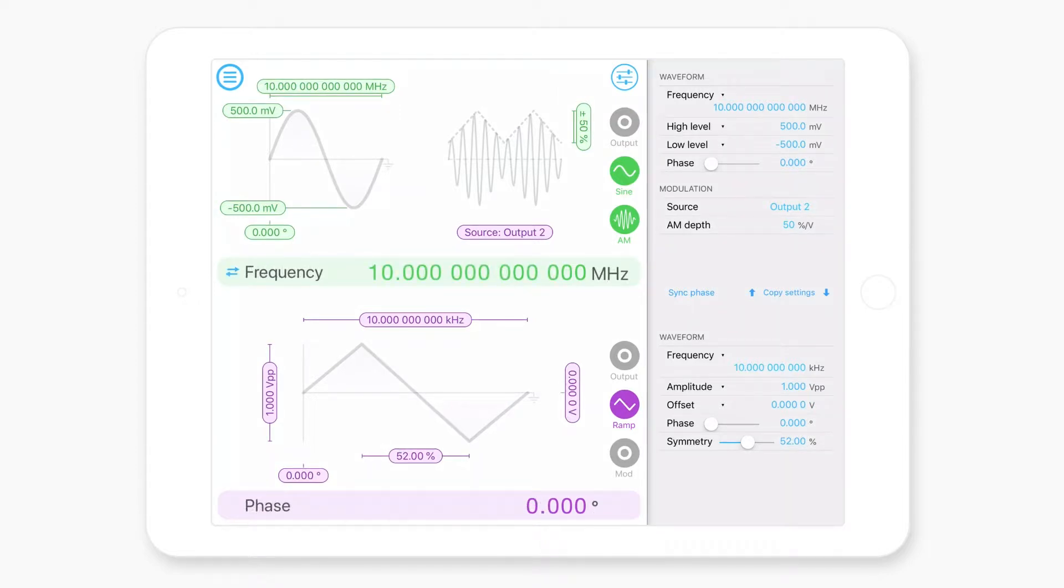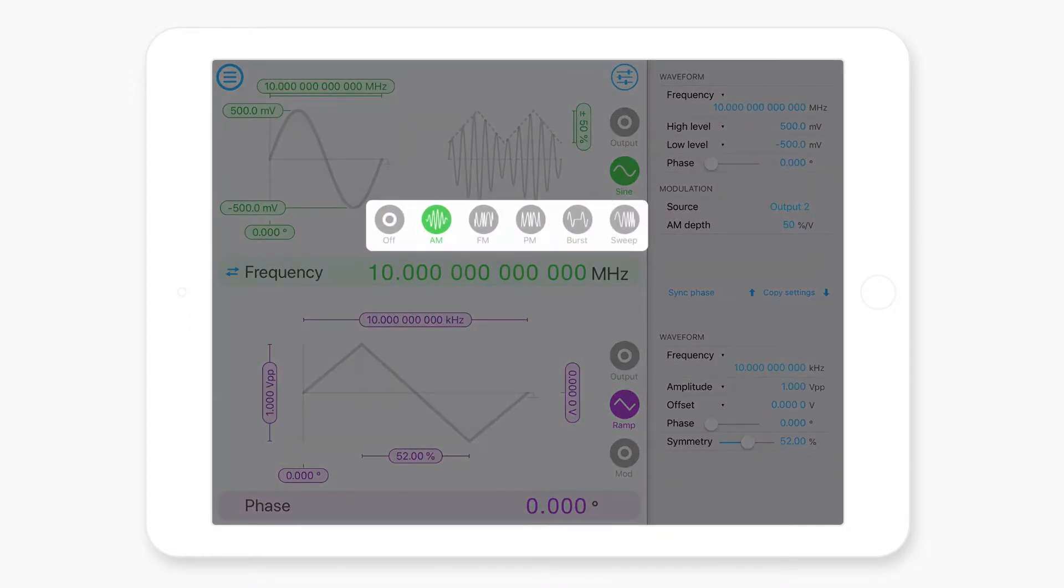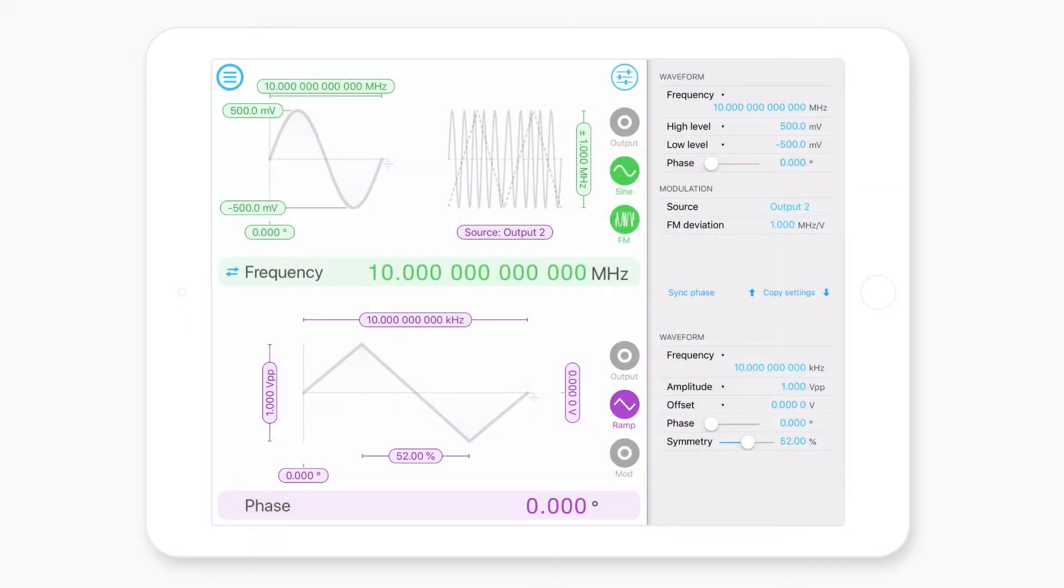Some other types of modulations that are supported include frequency modulation. So what this will do is modulate the frequency of the carrier between two values. In this case, if we set the source to internal, what this will do is modulate the carrier frequency by plus or minus one megahertz defined by the FM deviation. And it'll do this at a frequency of 100 hertz.